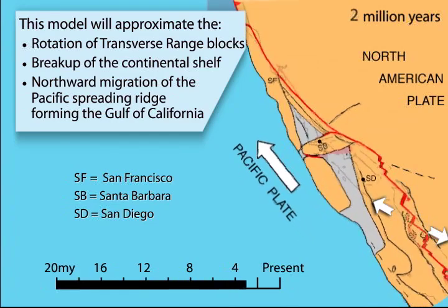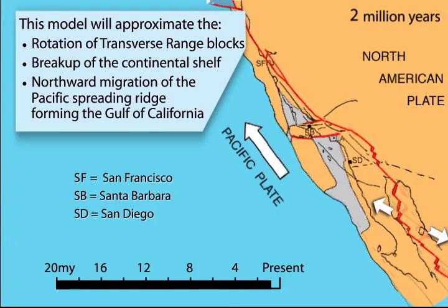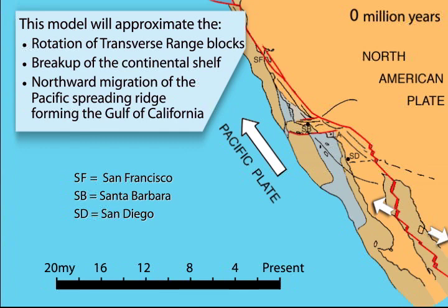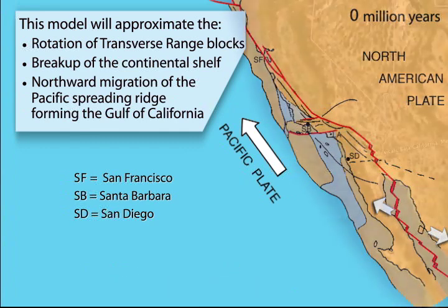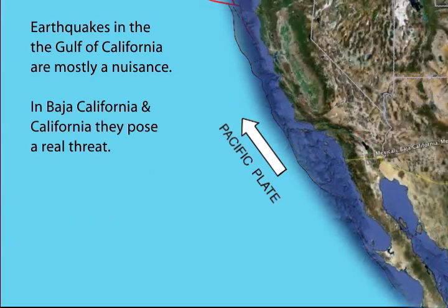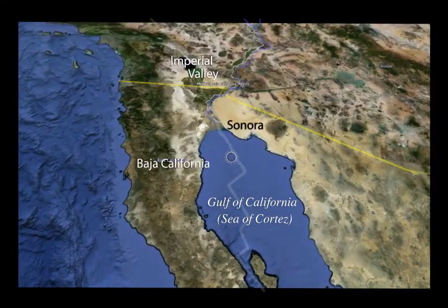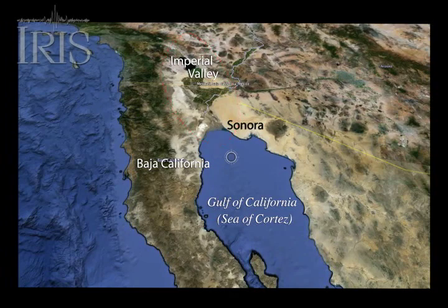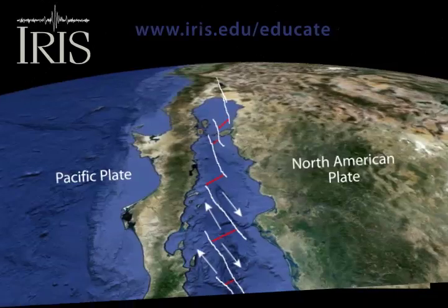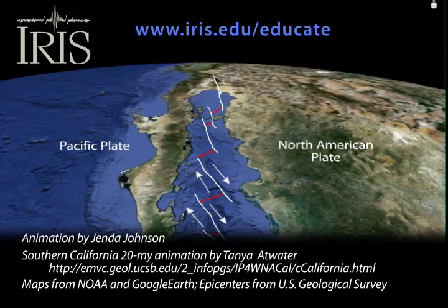The Baja California Peninsula and most of southwestern California is a remnant of the North American continent that was sheared off and moved to its present position. Earthquakes in the Gulf are more of a nuisance than a threat. However, the on-land part of this spreading ridge extends into Baja California, Mexico and the Imperial Valley of California, where it is transitioning from a ridge-transform boundary to the continental boundary. This area is especially vulnerable because it's underlain by soft sediment that can shake violently during earthquakes. Scientifically, the Gulf is a classic place to study the early stages of the opening of an ocean basin.